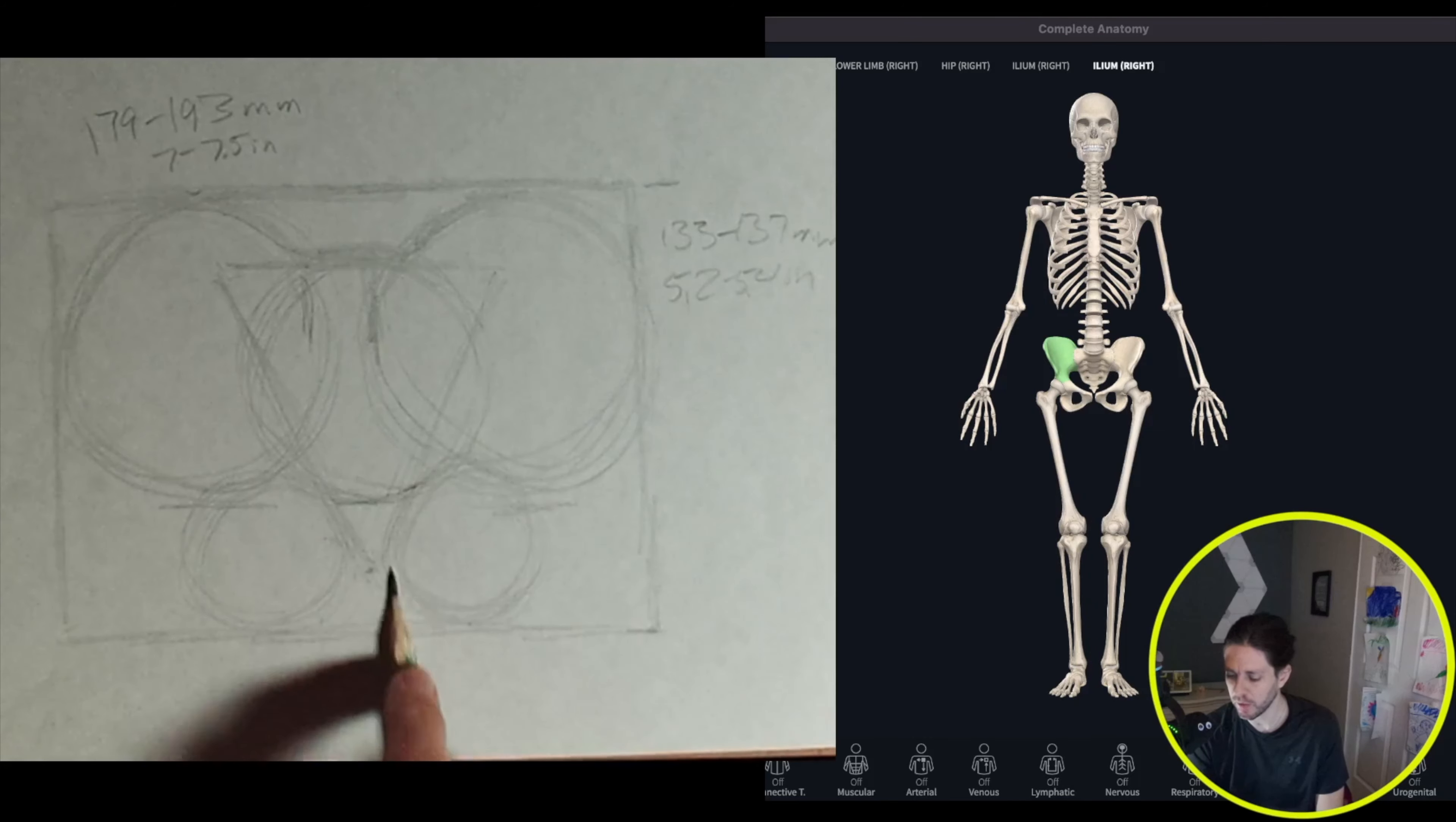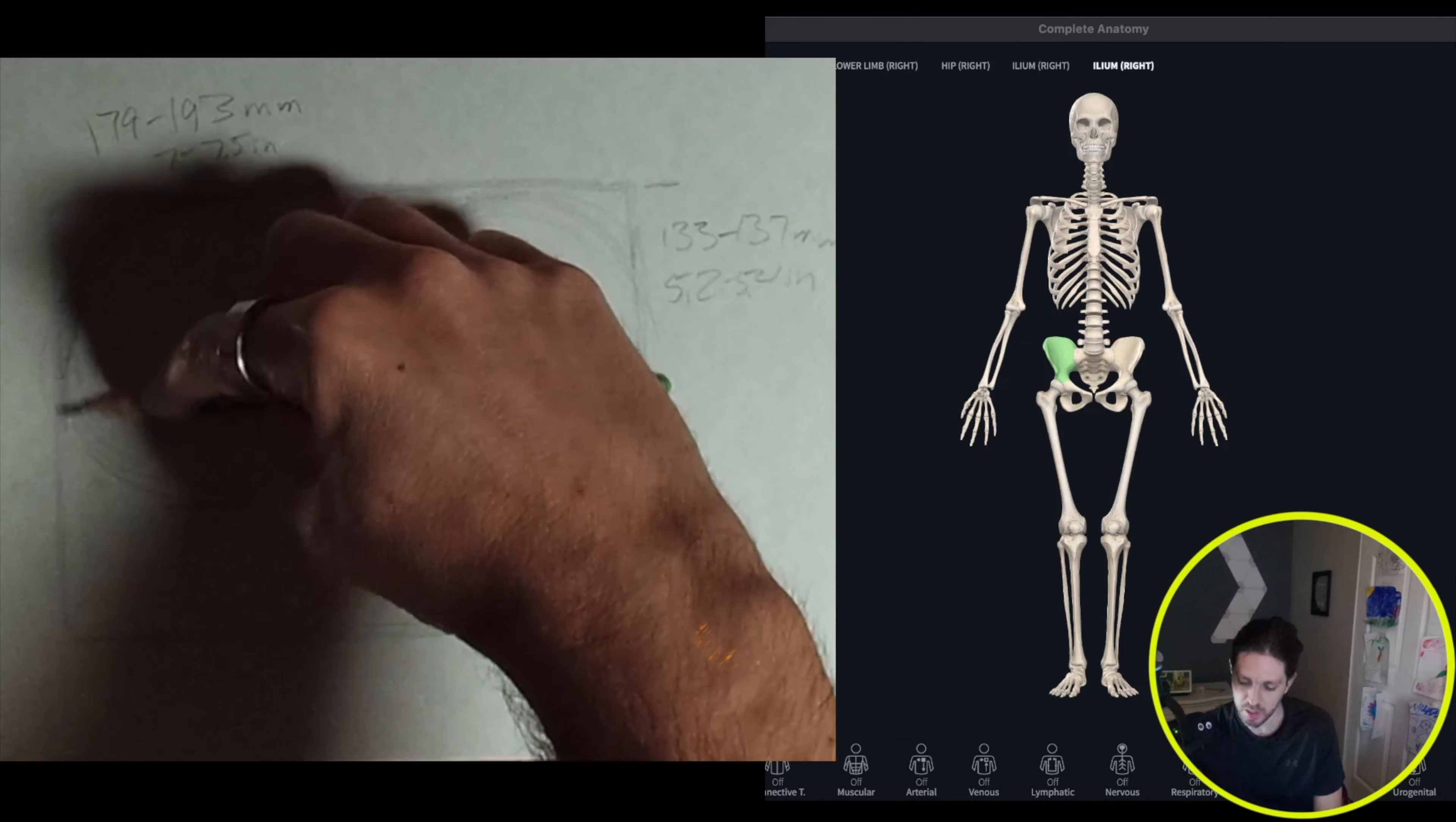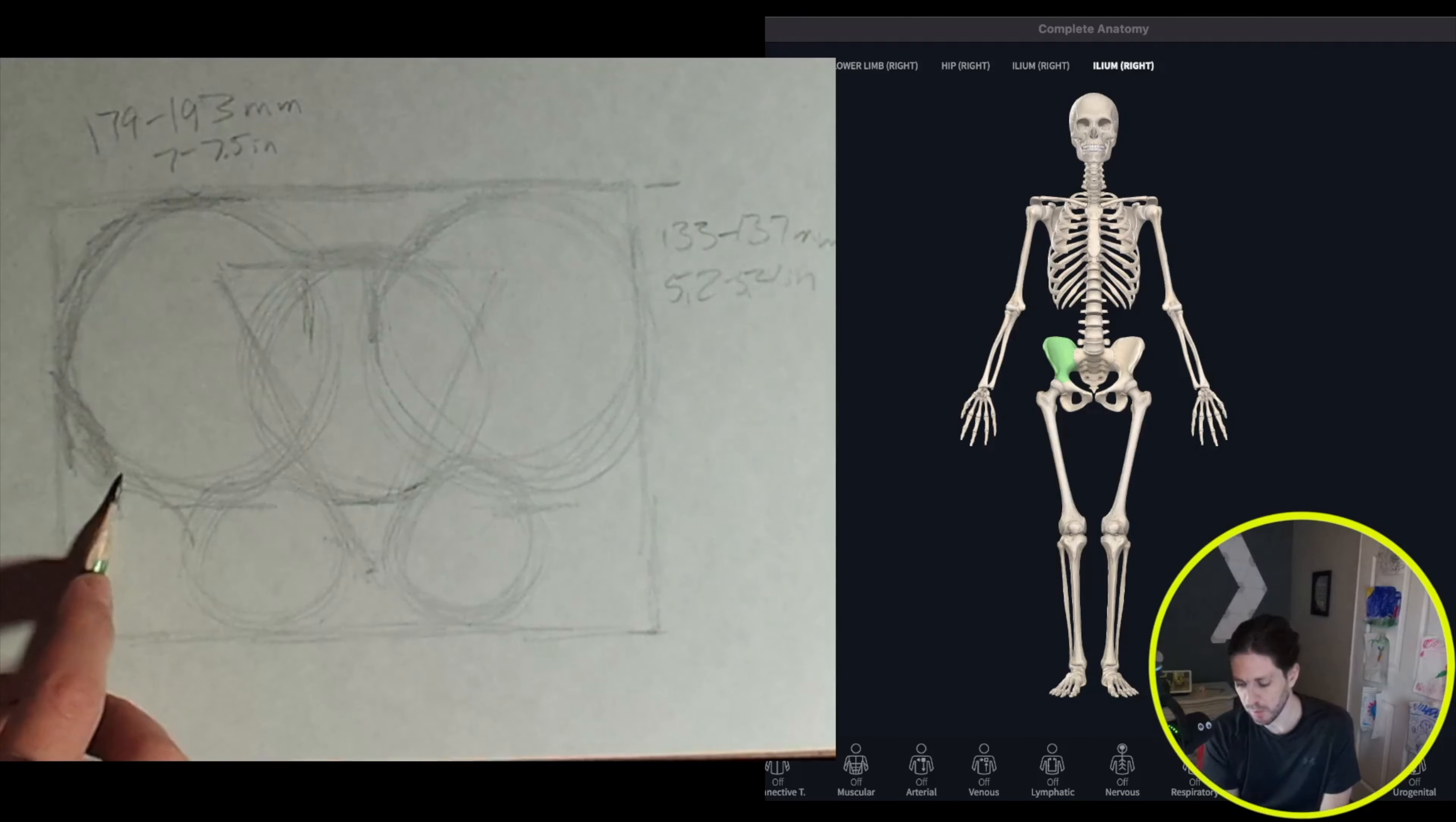All right, so now we kind of have our outline structure, so let's go ahead and start marking it. So back to the ilium, we're going to start at the top, it's going to curve down, touch the side, and then it's going to actually curve in and back out a little bit, kind of have that curvature before it comes back in.